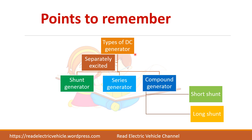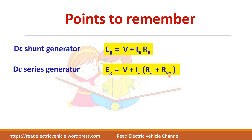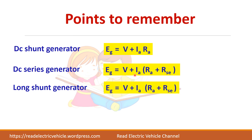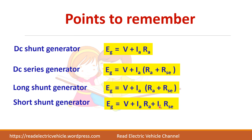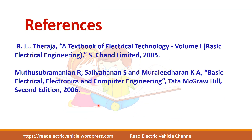The types of DC generator are separately excited and self-excited generator. In self-excited generators there are three types: shunt, series, and compound. In compound, you have long shunt and short shunt. For the series generator you must include the series resistance in the equation. For the long shunt generator the equation is the same as the DC series generator equation. For the short shunt generator, the current IL × R_sc term is added. If you like the video, please subscribe to the Reed Electric Vehicle channel. Thank you.